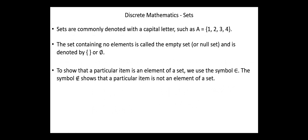Sets are commonly denoted with a capital letter, such as A = {1, 2, 3, 4}, and set B = {A, B, C}, etc. The set containing no elements is called the empty set or null set, and is denoted by empty brackets or by the phi symbol. To show that a particular item is an element of a set, we use the symbol 'belongs to'. The symbol 'does not belong' shows that a particular item is not an element of a set. For example, if we have the set {1, 2, 3, 5, 7}, then 1 belongs to A, but 4 does not belong to A.